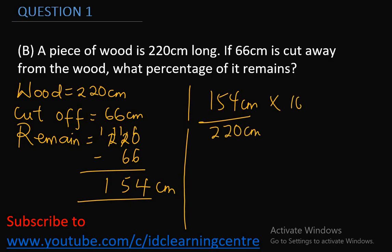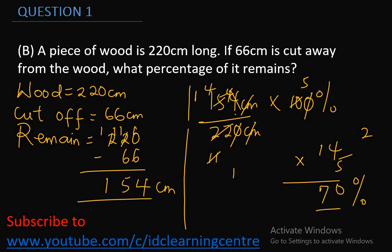So, the percentage that is left is 154 out of the total length, which is 220 cm is left. Then, you times by 100% to express in percentage. The cm cancels the cm. 0 cancels 0. 2 into 22 is 11. 2 into 10 is 5. 11 here 1, 11 into 15 is 1 remainder 4. Put it here, this is 44. 11 into 44 is 4. So, my answer will just be 14 times 5. 5 times 4 is 20, 0 carry 2. 5 times 1 is 5 plus 2. So, 70% is remaining.